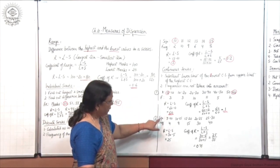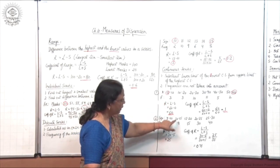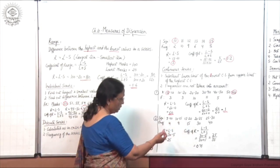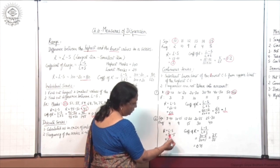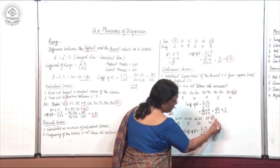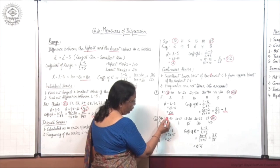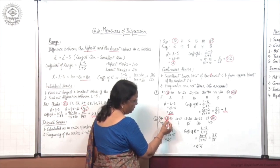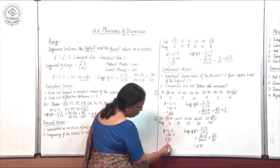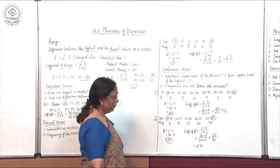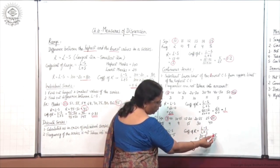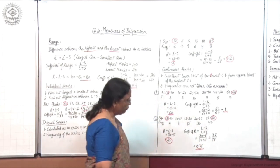Another example: if the class interval starts from 5 — say 5 to 10, 10 to 15, 15 to 20, and so on — frequencies are not taken into account. R = L minus S. The highest class interval's upper limit is 30, so L = 30. The lowest class interval's lower limit is 5, so S = 5. Range = 30 minus 5 = 25. Coefficient of range = 25 upon 35.